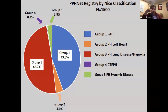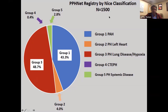In adults, Group 1 is most common, Group 2 second, and Group 3 third. In pediatrics, data from the PPH network — 13 academic pediatric centers with 1,500 patients — shows that Group 3, or lung diseases, has emerged as the most common form of pulmonary hypertension in the pediatric population, with Group 1 a close second. Group 2 is much lower at only 4%, CTEPH is very unusual, and Group 5 is 2.8%. Very different epidemiology from adults.